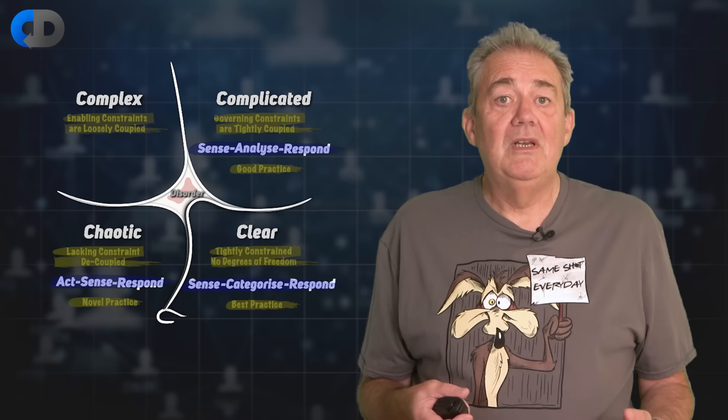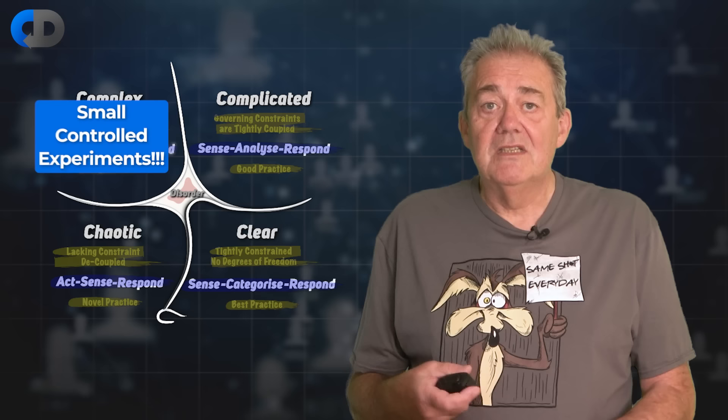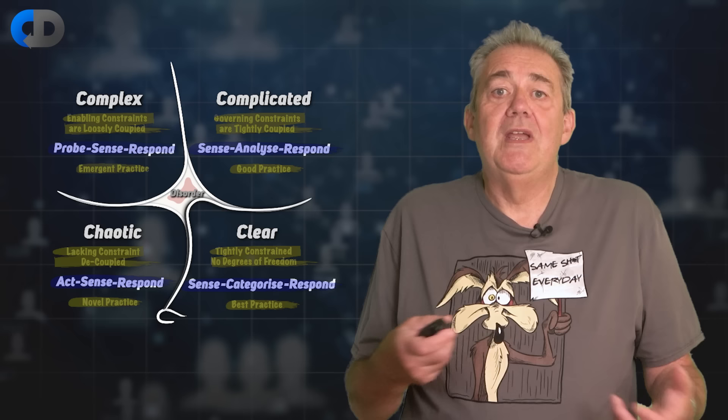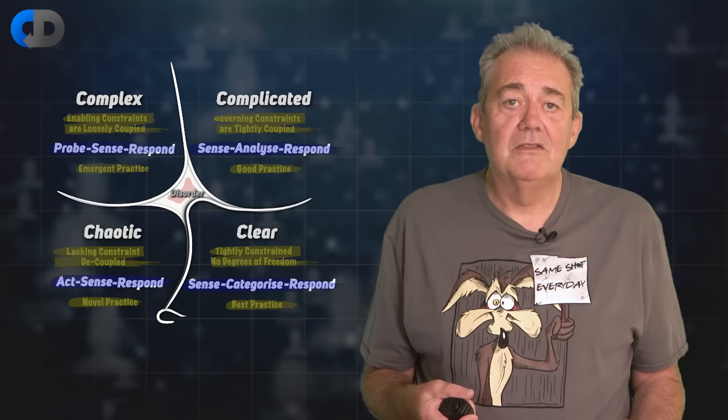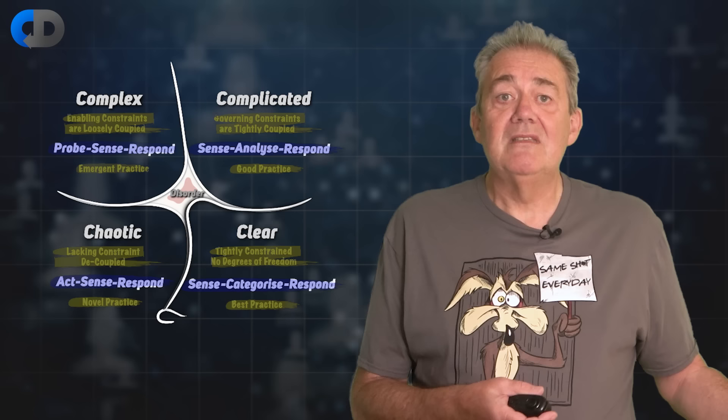The correct behaviour in complex systems is to probe, sense and respond — to carry out small controlled experiments, use them to gather facts so that we can figure out how things change when we do something. If we increase response time, the user may think their job wasn't completed if they're used to waiting a long time for the result. If we add a new feature aimed at our followers on Twitter, someone may buy Twitter and make it a less popular platform. These things may seem random, but they aren't really — they will remain stable until the system changes again.